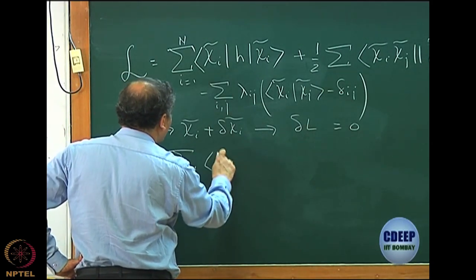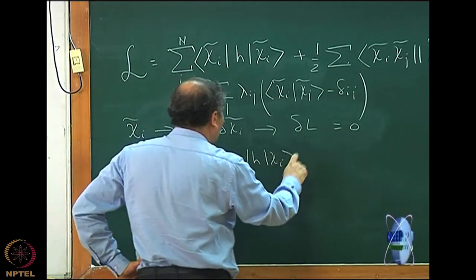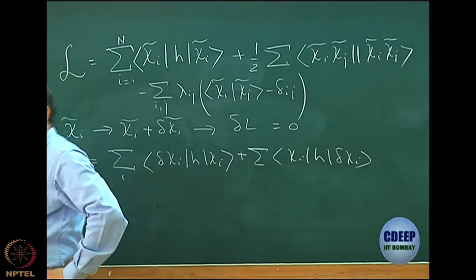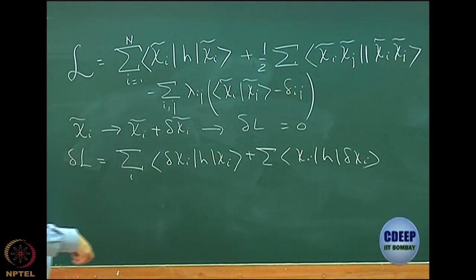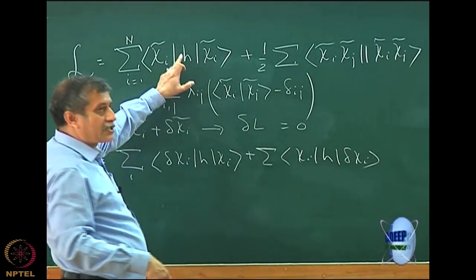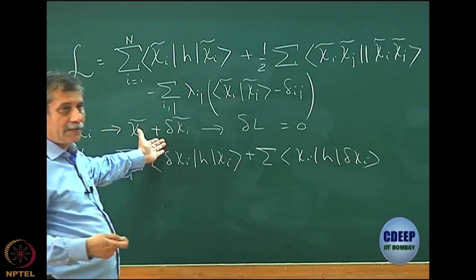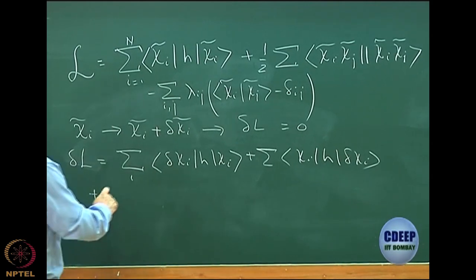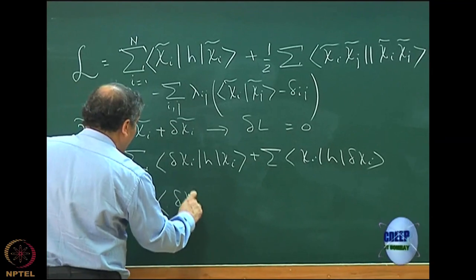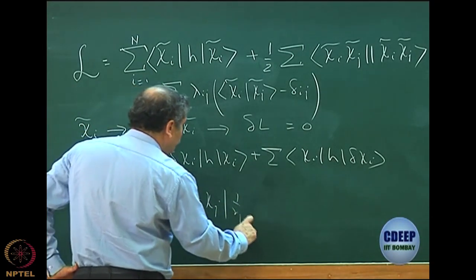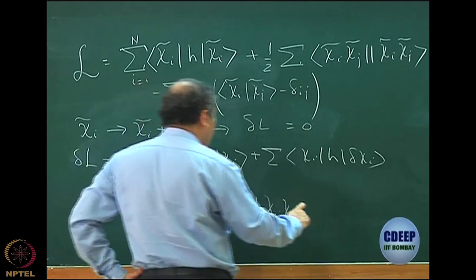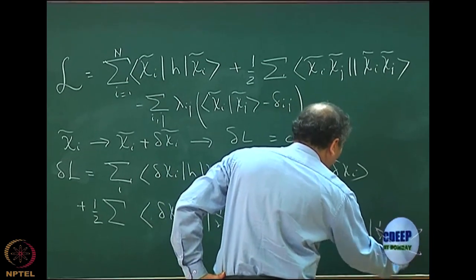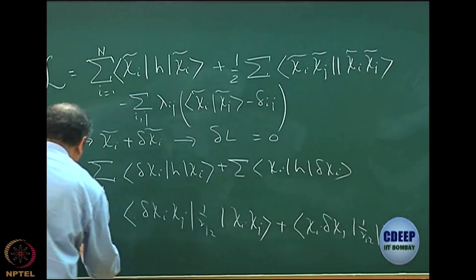If you look at the first-order change: I made χᵢ → χᵢ + δχᵢ. The first-order terms are ⟨δχᵢ|h|χᵢ⟩ + ⟨χᵢ|h|δχᵢ⟩, summed over i from 1 to n. There is no first-order change due to h itself because h does not depend on χᵢ — h is a fixed operator. Then we had plus half of the two-electron terms, which we wrote explicitly as ⟨δχᵢ χⱼ|1/r₁₂|χᵢ χⱼ⟩.